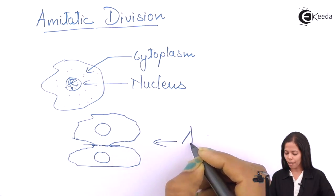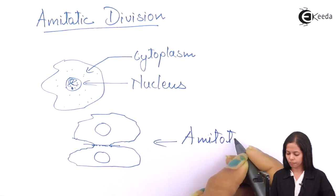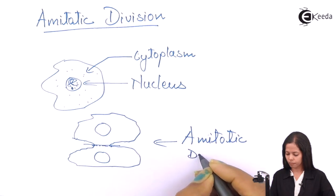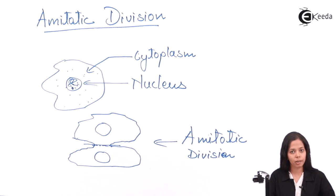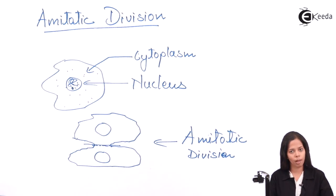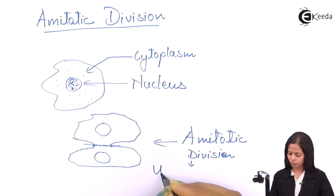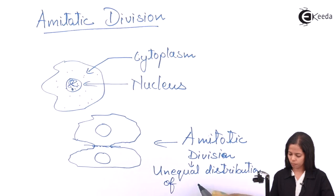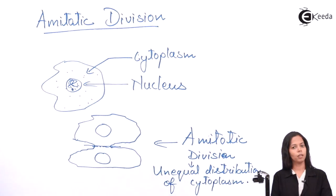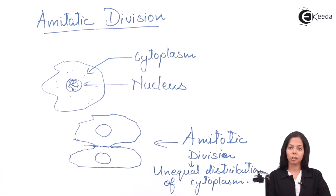This process is called amitotic division — generally you call it binary fission. So what is the basic concept of amitotic division? There is unequal distribution of cytoplasm. So here we completed amitotic division. Next we are going to study amitosis in detail. Thank you very much, students.